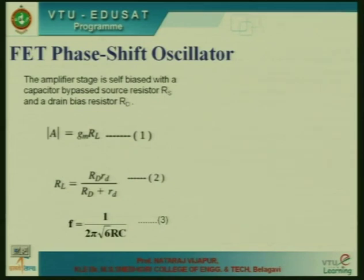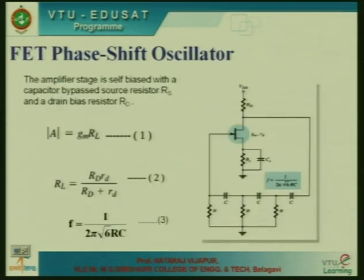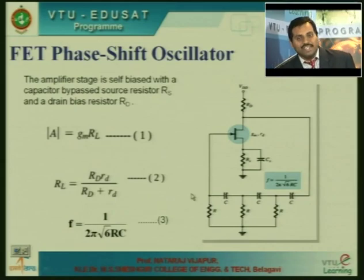Similarly, you can have a field effect transistor RC phase shift oscillator. The FET is also an amplifier — when connected in common source configuration, there is a 180 degrees phase shift between input and output. To counter this, you need an RC network which again provides 180 degrees phase shift, giving the required 360 degrees total.